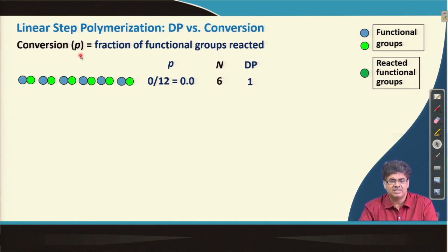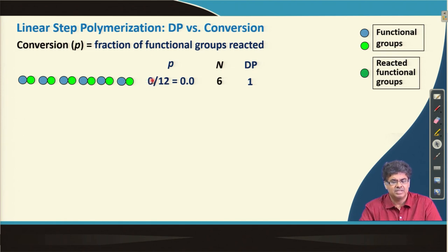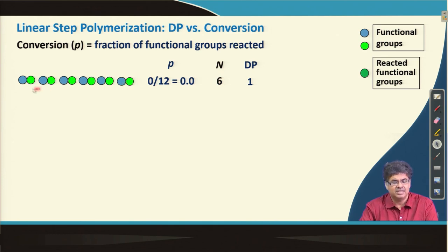We define conversion P as the fraction of functional groups that have reacted in linear step polymerization. For example, if you have 100 functional groups and 90 have reacted, the conversion is 90/100 = 0.9 or 90%. To illustrate pictorially: with 6 AB-type monomers (12 functional groups), at the start no reaction has occurred, so conversion P = 0, the number of molecules N = 6, and the degree of polymerization is 1.